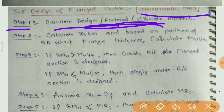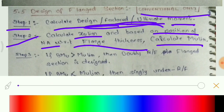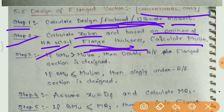Design steps देखिए। Step 1: Calculate design moment (ultimate/factored moment). Step 2: Calculate xu limit, and based on position of neutral axis with respect to flange thickness, calculate mu limit। पहले xu limit निकालना है और neutral axis का position देखना है।